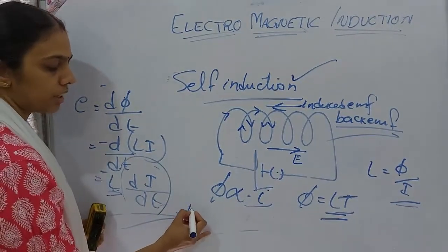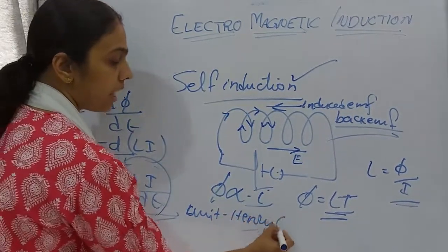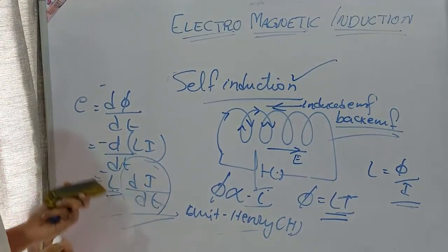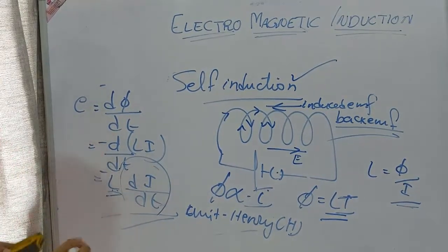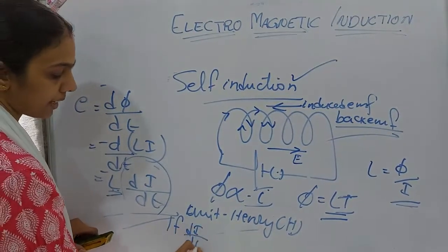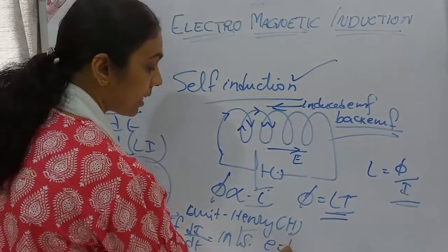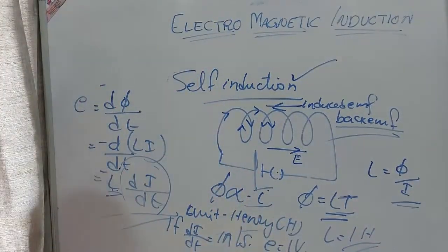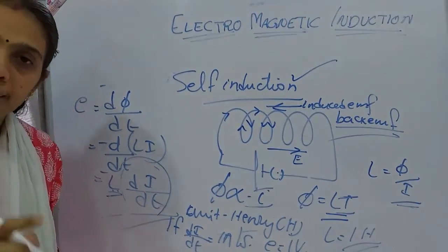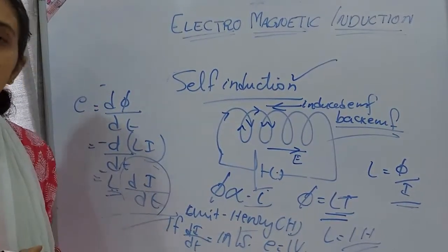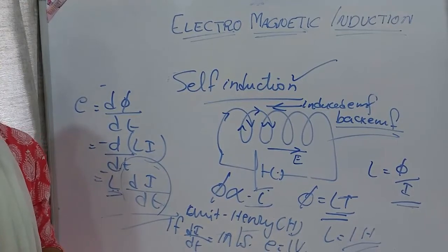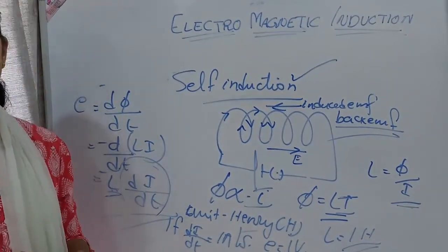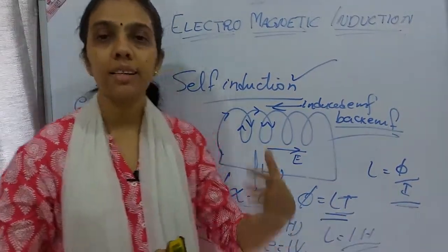The unit of self-inductance (coefficient of self-induction) is henry (H). We define one henry as: if dI/dt = 1 ampere per second produces an induced EMF of 1 volt, then the self-inductance L = 1 henry.